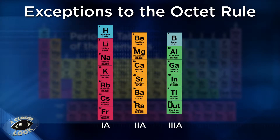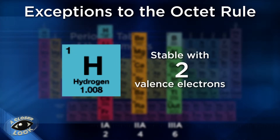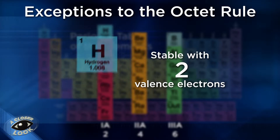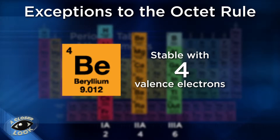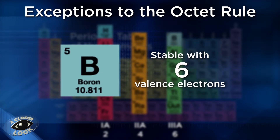Groups one, two, and three of the periodic table have, respectively, elements that can have two, four, and six valence electrons when they bond and still be stable. Group one contains the most notable exception, hydrogen, which is so small it can be stable with only two valence electrons. In group two, an example is beryllium — when it forms covalent compounds, it would have only four valence electrons but still be stable. A group three exception would be boron, which can have six valence electrons and still be stable.